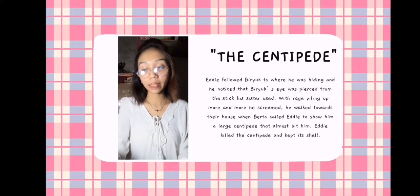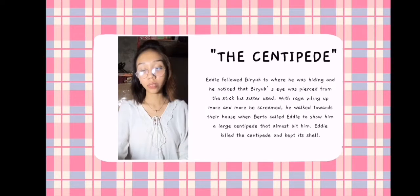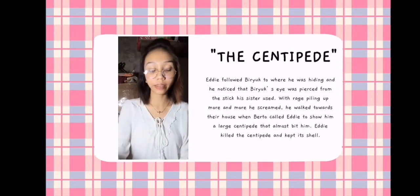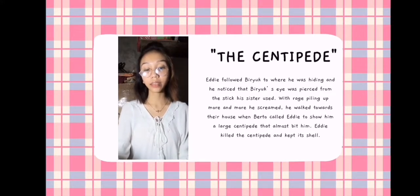Eddie asked his father's permission to keep Biruk for the meantime. His father said that the dog would make a good pointer. Eddie followed Biruk to where he was hiding and he noticed that Biruk's eyes were pierced from the stick his sister used. With rage piling up more and more, he screamed.